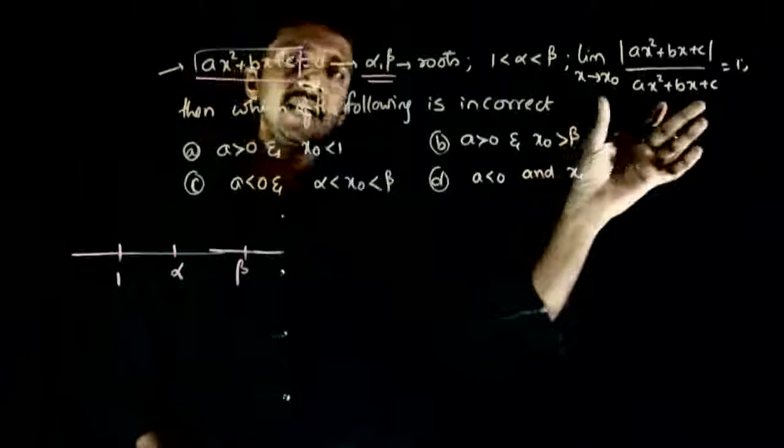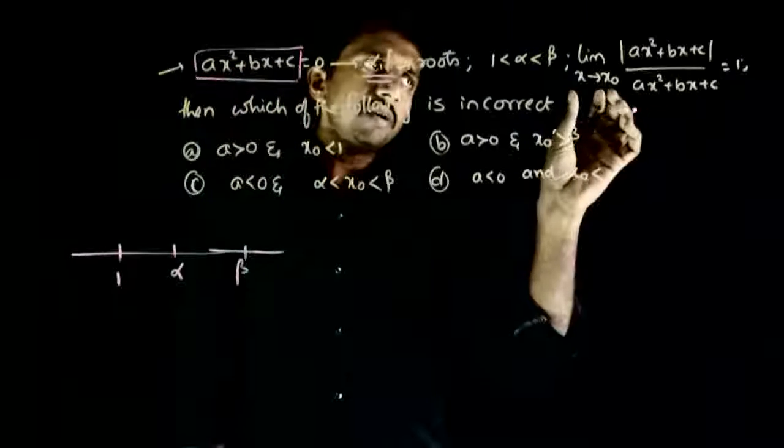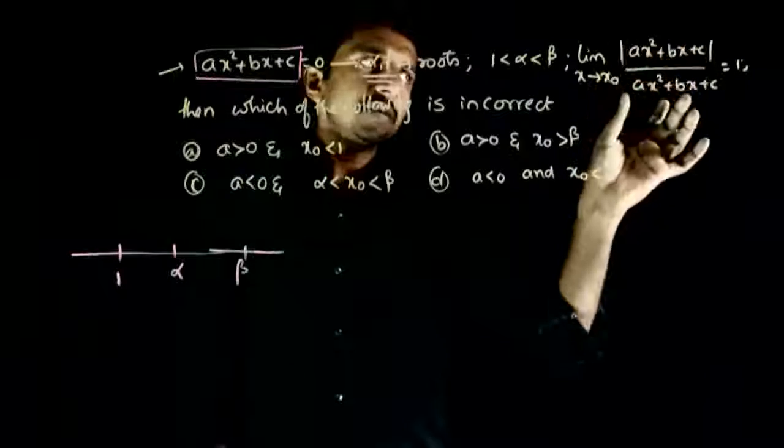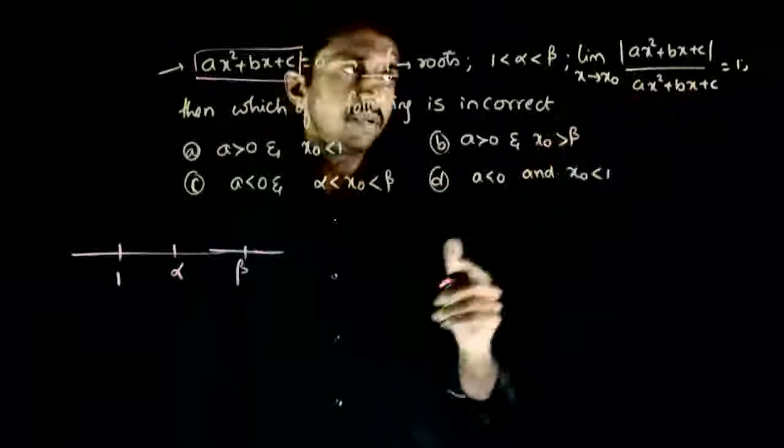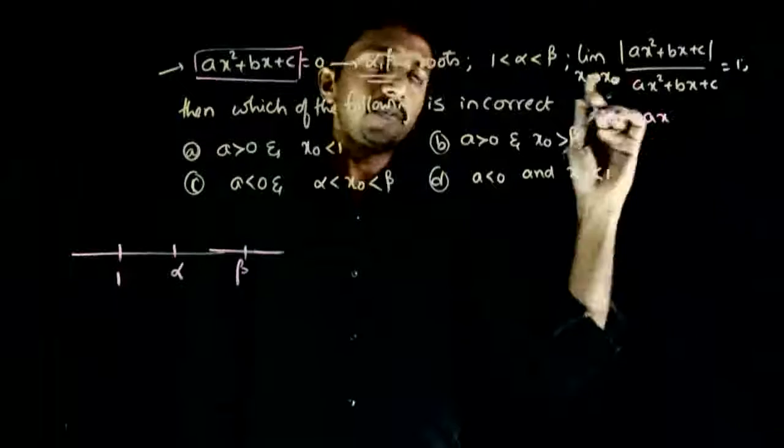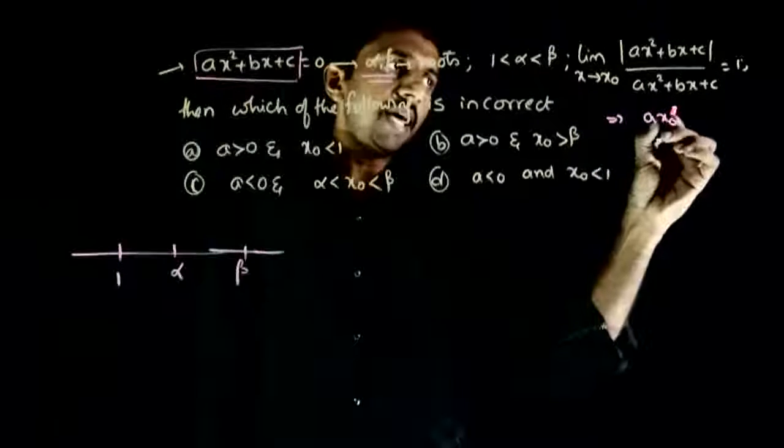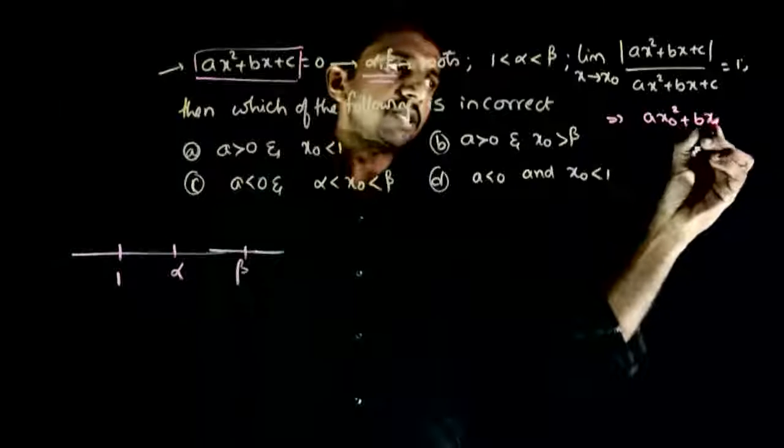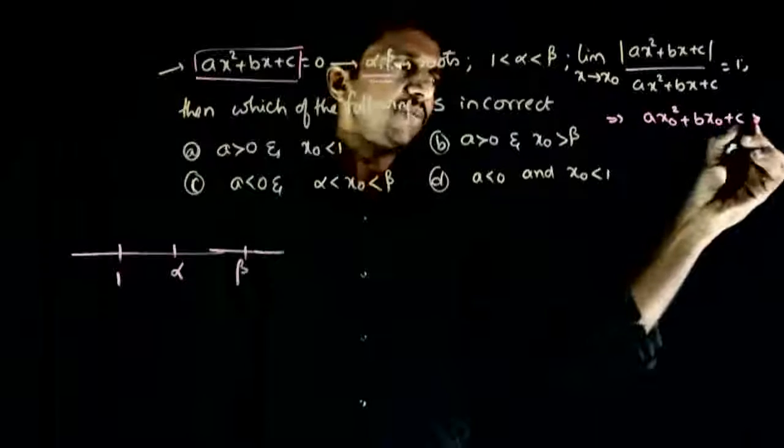First let us analyze this question. As x tends to x0, mod of this by this equals plus one. This implies that when we substitute x0, ax0 square plus bx0 plus c has to be greater than zero.